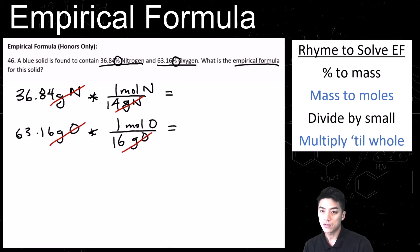So get your calculator and crunch these numbers. 36.84 divided by 14. And we're going to get 2.63 for nitrogen. It's 2.63 moles. And we're going to get 3.94 moles for oxygen.